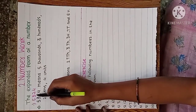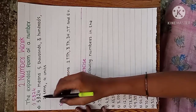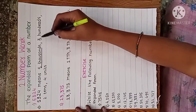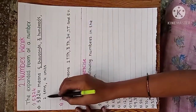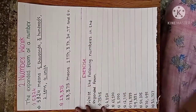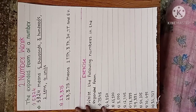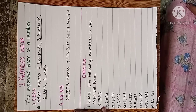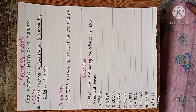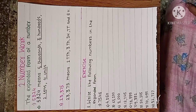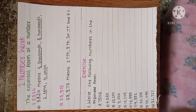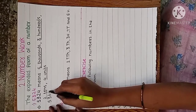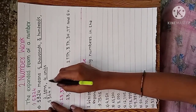5324 means five thousand, three hundred, two tens and four units. Now for 5324 we have to write down the expanded form. Expanded form means addition of the place value of each digit — here 5, 3, 2, 4 — and the place of five is five thousand.